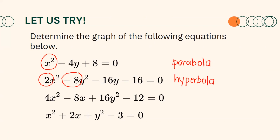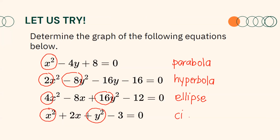For the third one, the numerical coefficients of x² and y² are positive 4 and positive 16 respectively. They are both positive but not equal. Therefore, this equation represents an ellipse. For the fourth one, the numerical coefficient of x² is positive 1 and the numerical coefficient of y² is also positive 1. Since they are equal, this equation represents a circle.